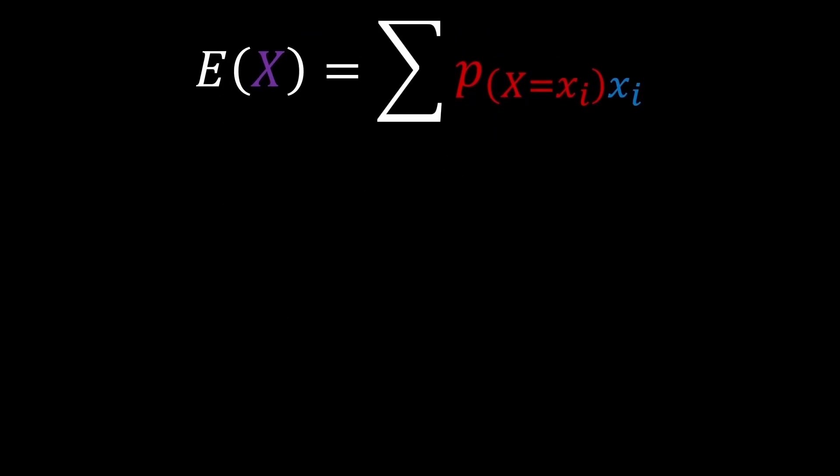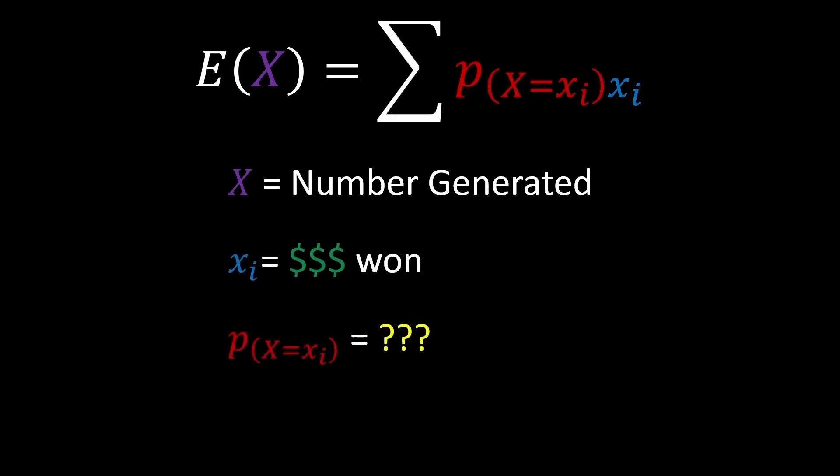Applying this to our game, we know the random event is equal to the number generated and the value of that event is the dollar amount. But you may be asking, what are the probabilities? Well, we can find them using the rules of the game.